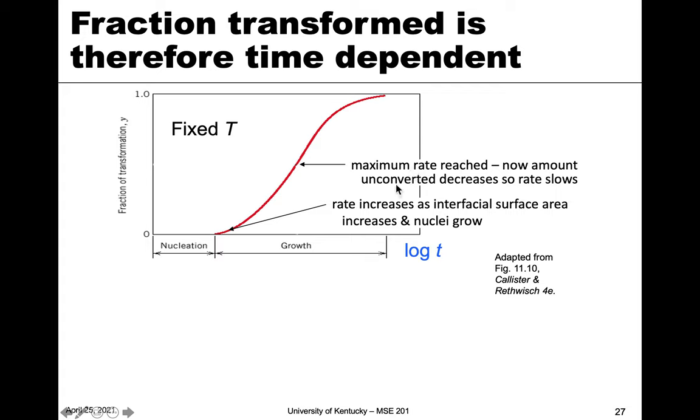Here in the middle, this is the maximum rate. We now have the unconverted amount of the component decreases, and so therefore, at that point, the rate starts to slow. Here, the transformation is very close to being completed. It might asymptotically approach one. It's often very difficult to get all the way to one, and so sometimes we just approximate that as as far as we can get.